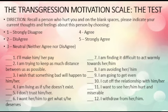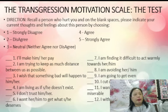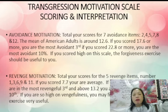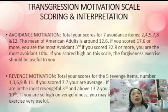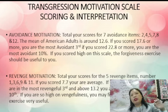Did you answer all twelve items? Let's have the scoring and interpretation. You total your scores for seven avoidance items — that is number 2, number 4, number 5, number 7, number 8, and number 12. I-add nyo lang kung ano yung sinulat nyong score — kung 1, 2, 3, 4, or 5. The mean of American adults is around 12.6. If you scored 17.6 or more, you are the most avoidant third. If you scored 22.8 or more, you are the most avoidant 10%. If you scored high on this scale, the forgiveness exercise should be useful for you.